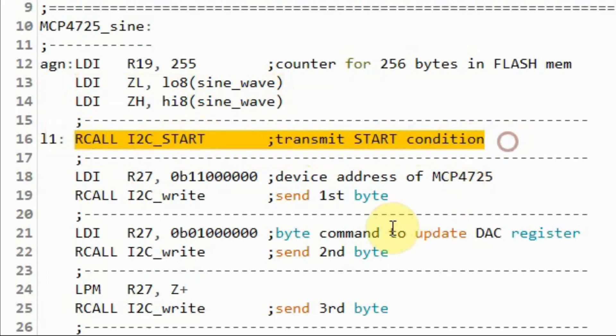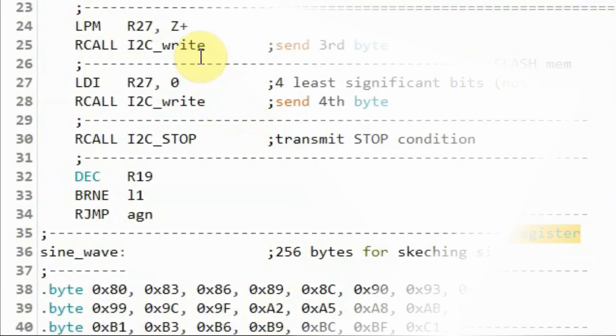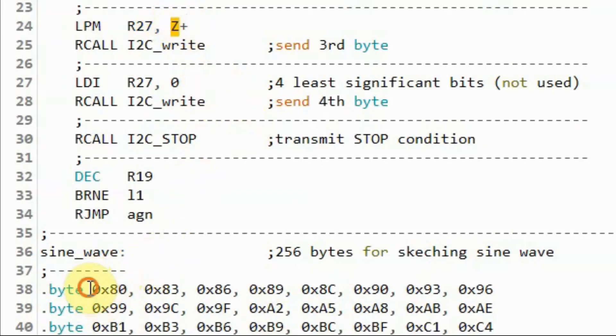We begin by sending the start condition. And then we send the first byte, which is the device address. And then we send the second byte, which is the command byte. Through pointer Z, we get the first byte from flash memory and use it as the third byte and send it to the DAC. And then we send the fourth byte. And here, for the fourth byte, we are sending zero. It means that we are ignoring the four least significant bits. And we are just focusing on the eight significant bits. And then we send the stop condition.